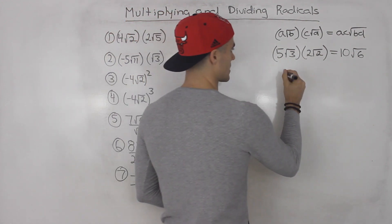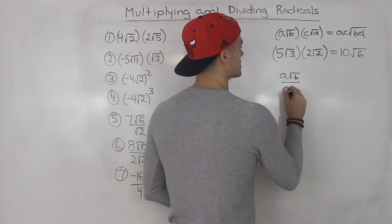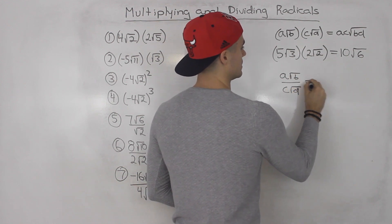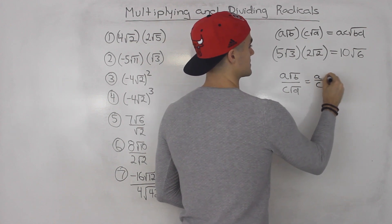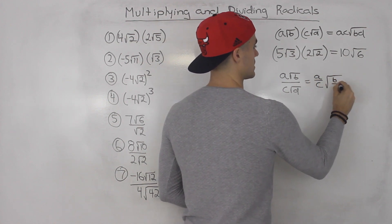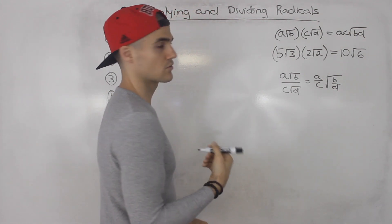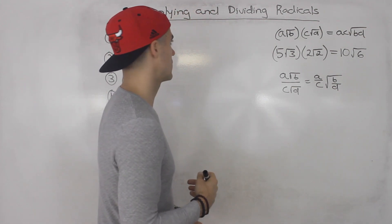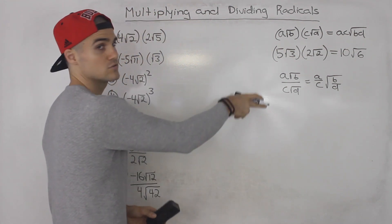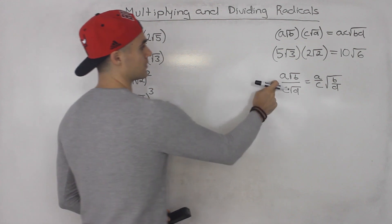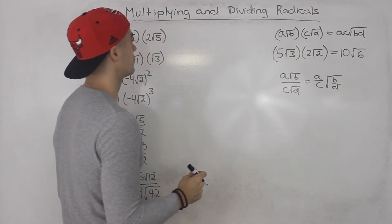Dividing is pretty much the same thing. We'd have a√b over c√d. That would be a over c, and then inside the radical would be b over d. So the radical changes as well. We're going to go over a bunch of examples, so these two general rules are the ones you may want to write down.